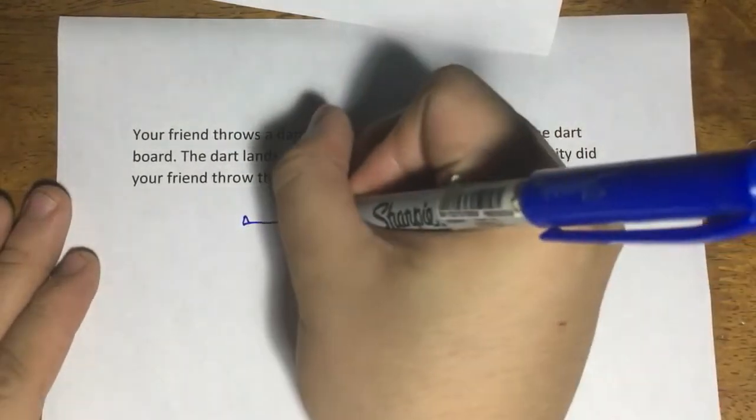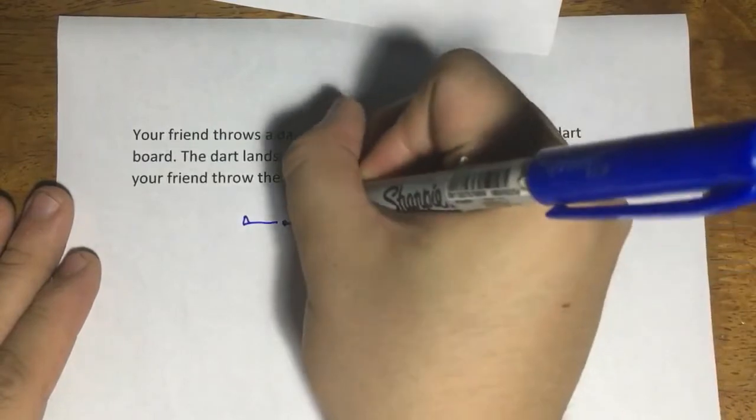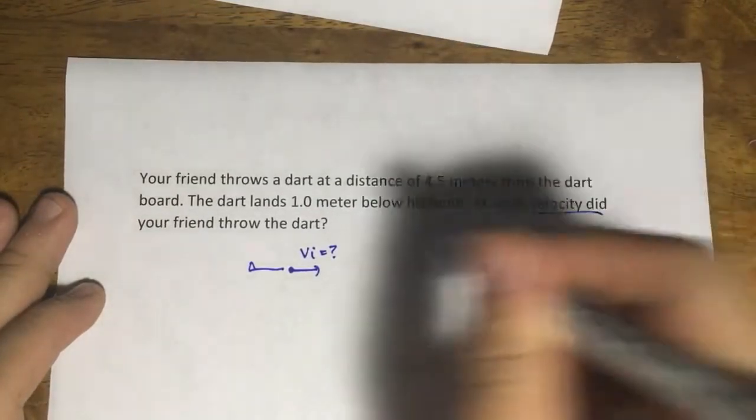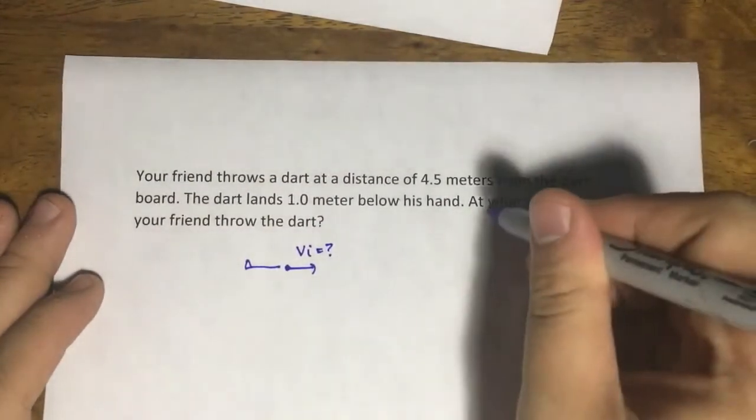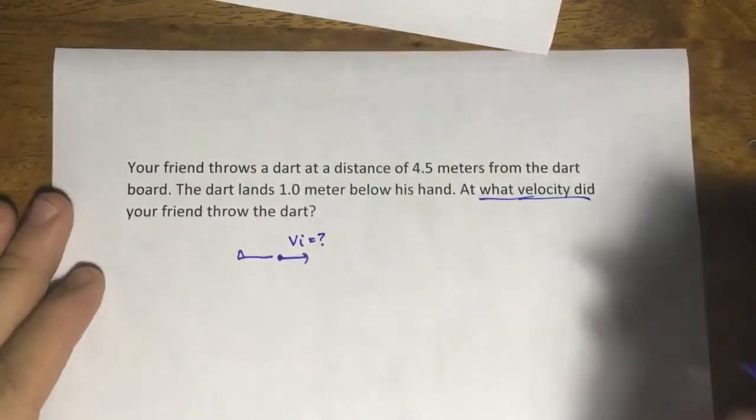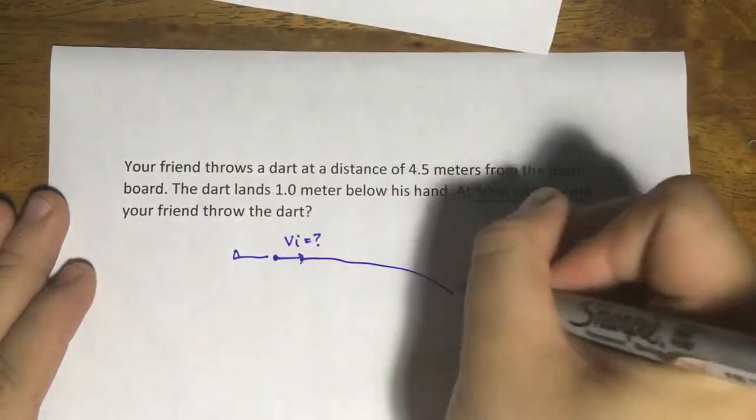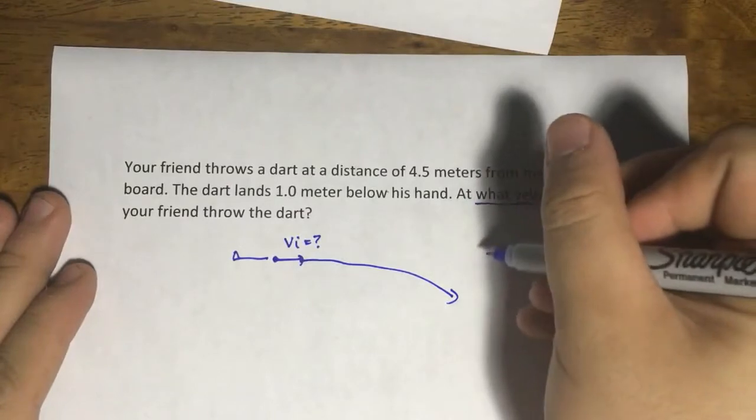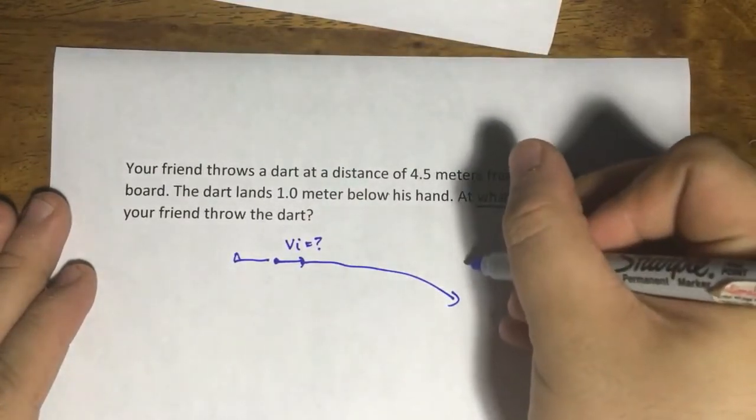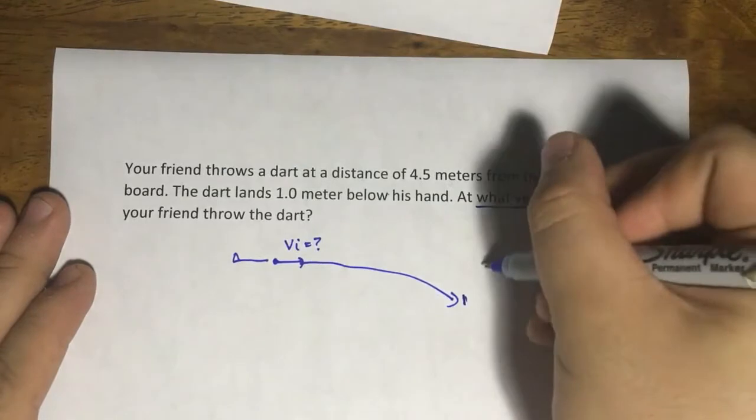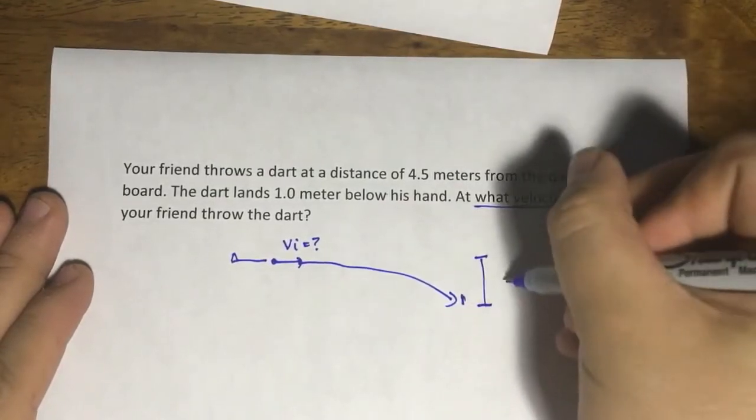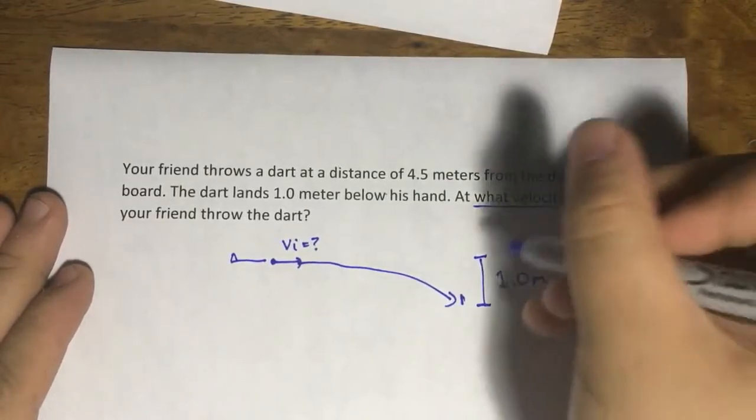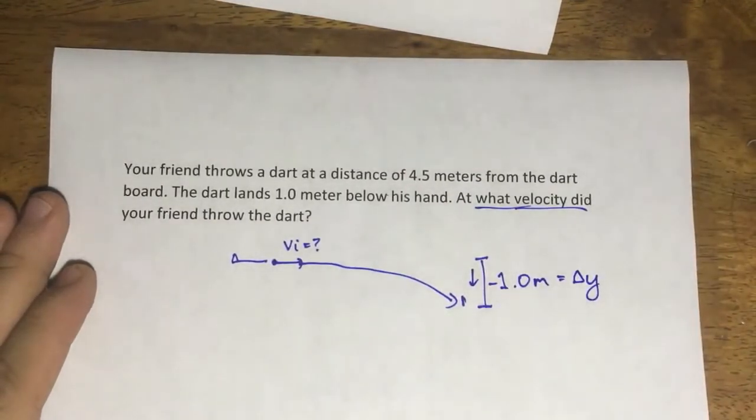You know that it will projectile in its flight. The dart lands 1 meter below the hand. So it was launched here, it landed here. And the distance is 1 meter below the hand. So this is your delta y. And because you're going down, this is negative.